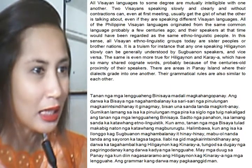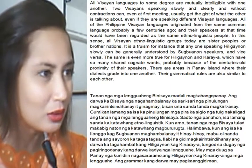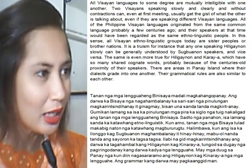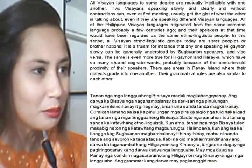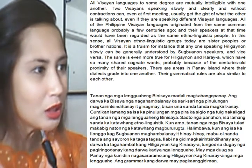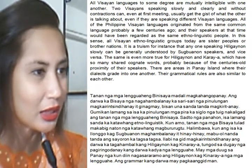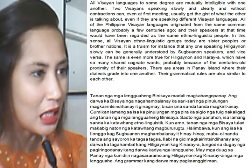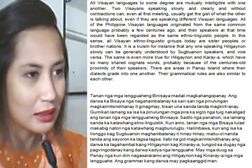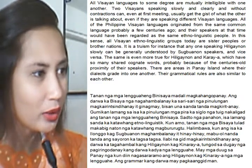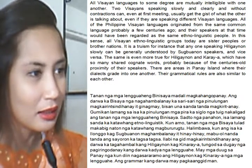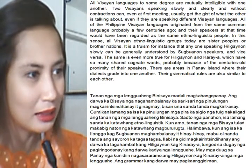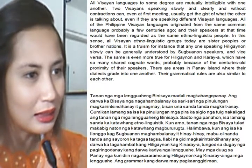Therefore, all Visayans today can be considered related peoples. For example, if an Ilonggo and a Cebuano speak slowly to each other, they can understand each other word by word. Especially, two speakers of Hiligaynon and Kinaraya can readily understand each other due to the long period of proximity between these two languages. There are areas in Panay where Hiligaynon and Kinaraya are spoken together, and their grammars are also similar.